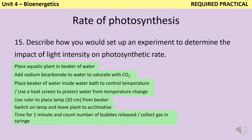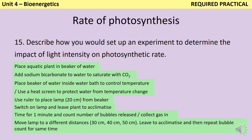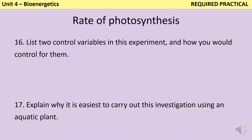Now we're going to change our independent variable. We use our ruler to measure out different distances — we maybe move the lamp to 30 centimetres, 40 centimetres, or 50 centimetres. At each distance, we leave it for the same amount of time to acclimatise, then repeat counting bubbles for the same amount of time. Once we've done all of the different distances, it's important that we repeat the entire experiment to ensure that the data are repeatable. The two really important control variables are the amount of carbon dioxide and the temperature, because either one could be a limiting factor, and we only want the light to be affecting the rate of photosynthesis.